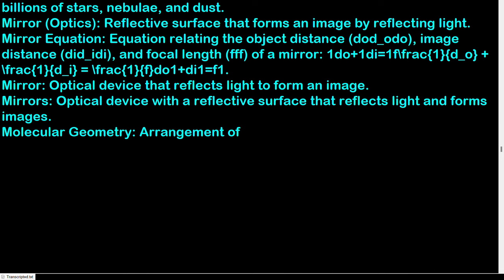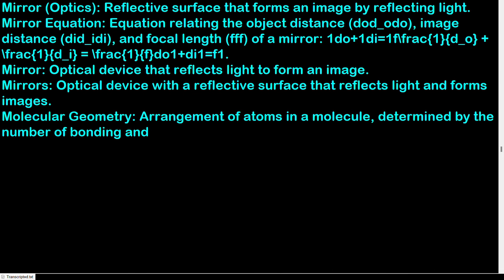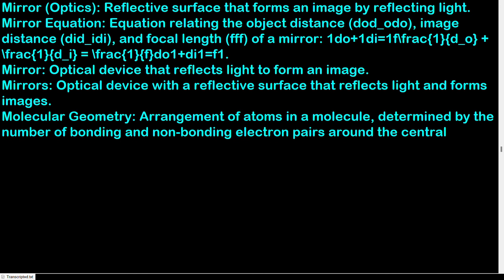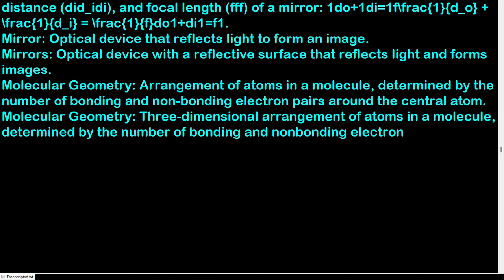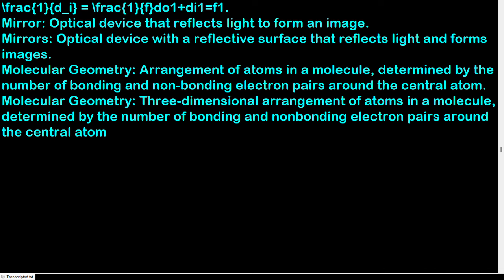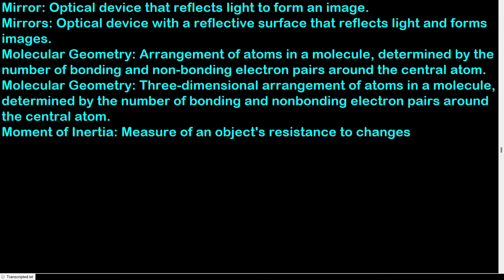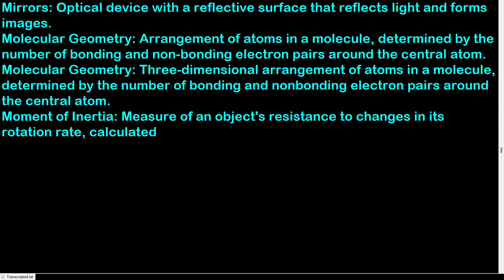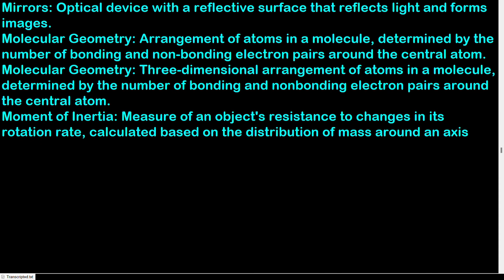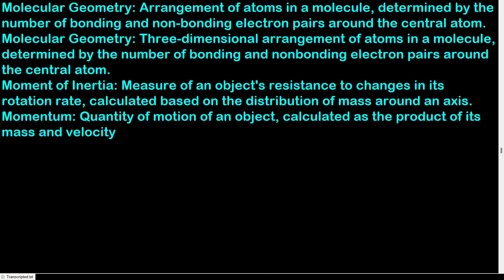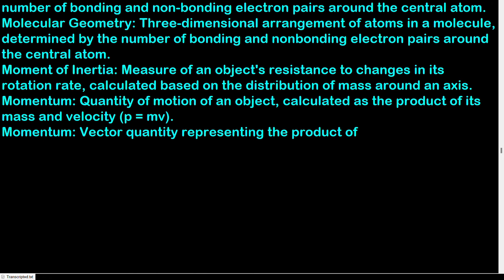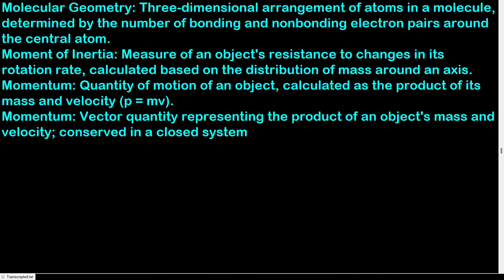Molecular geometry: three-dimensional arrangement of atoms in a molecule, determined by the number of bonding and non-bonding electron pairs around the central atom. Moment of inertia: measure of an object's resistance to changes in its rotation rate, calculated based on the distribution of mass around an axis. Momentum: vector quantity representing the product of an object's mass and velocity; p = mv — conserved in a closed system.